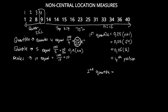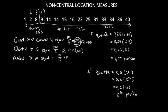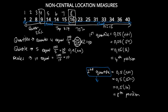For the second quartile, we multiply by 2 to get 50, divide by 100 to get 0.5, then multiply by n plus 1: 0.5 multiplied by 16 gives us 8. Counting to the eighth position in our data set, we get the value 16, which divides the bottom half of the data from the top half.